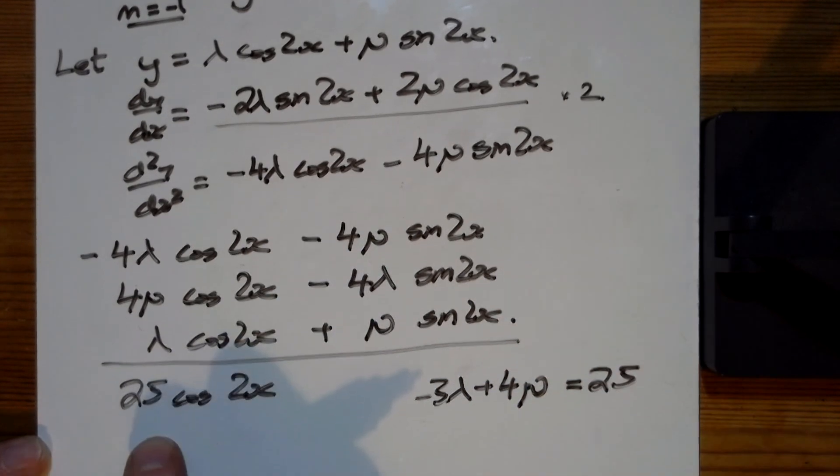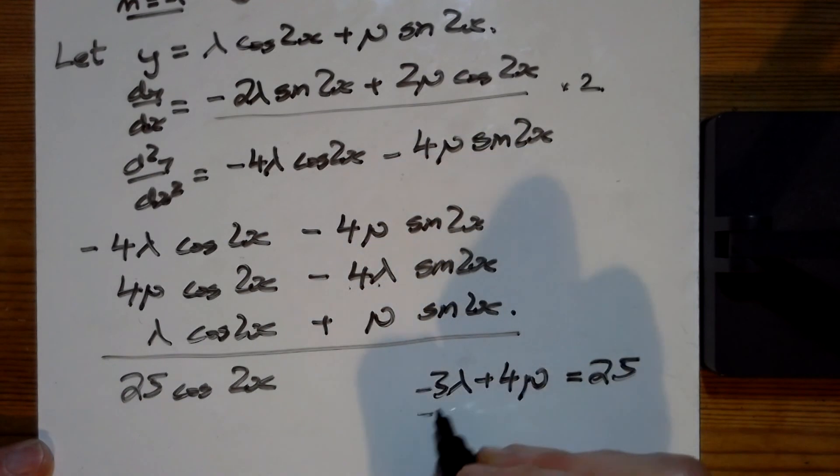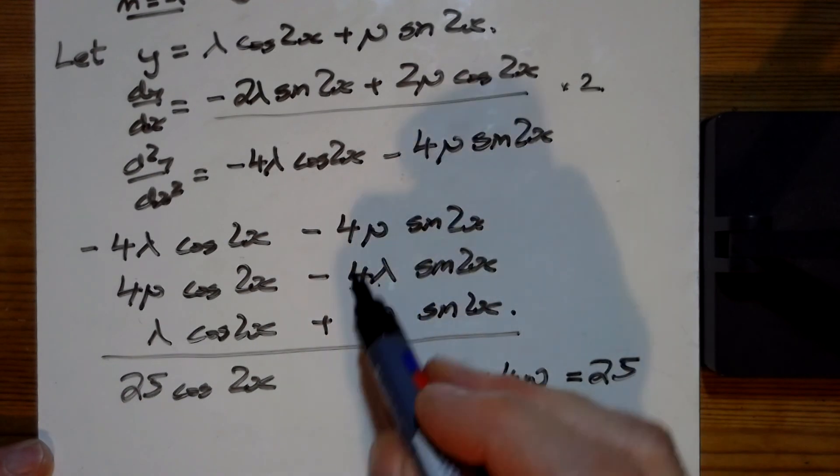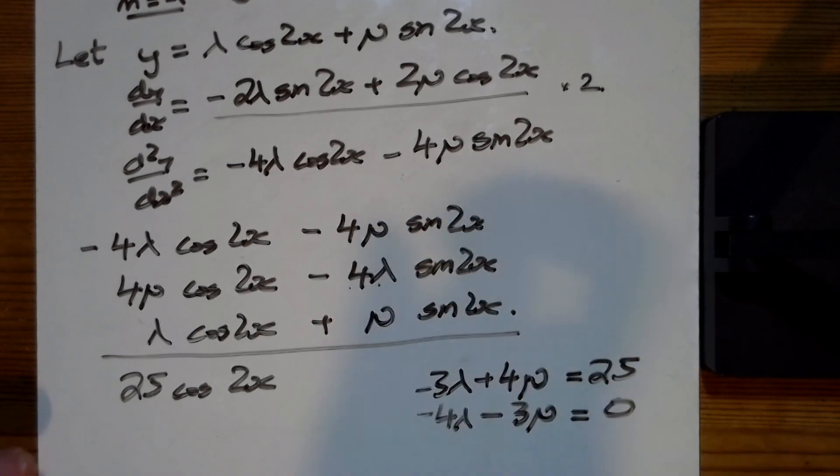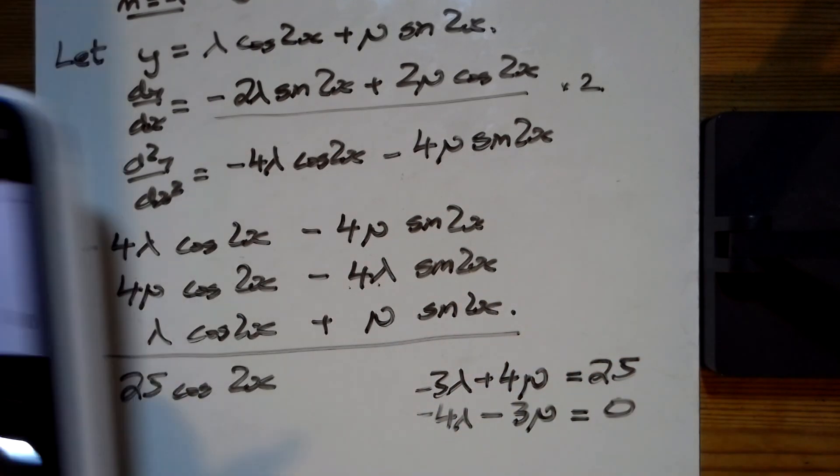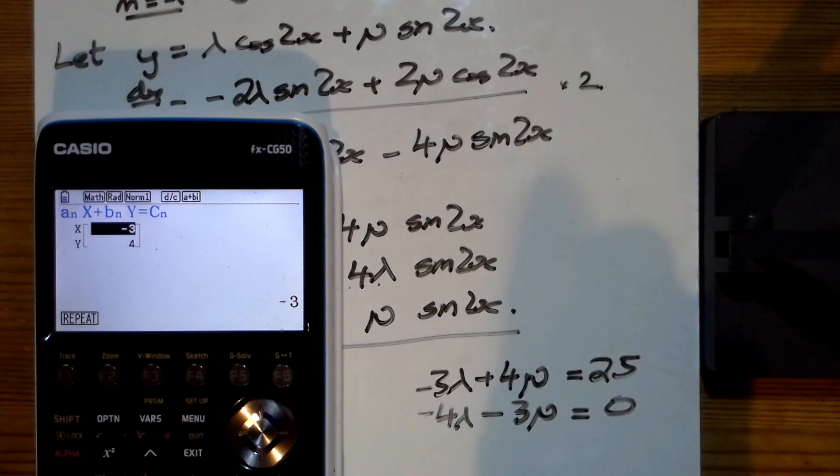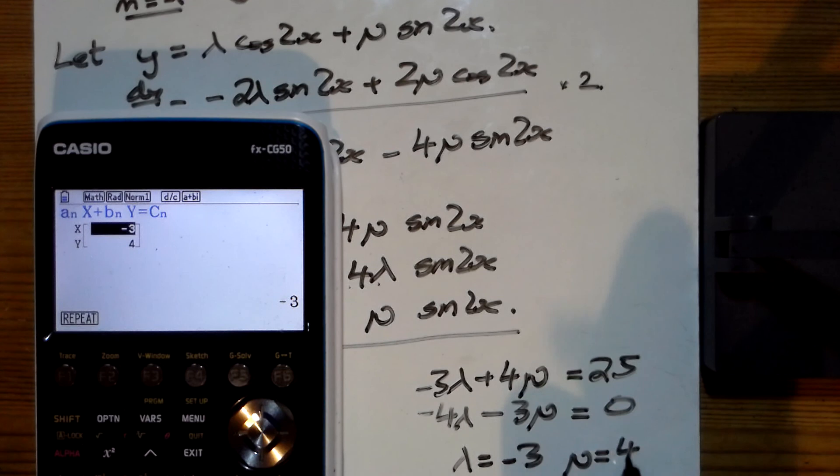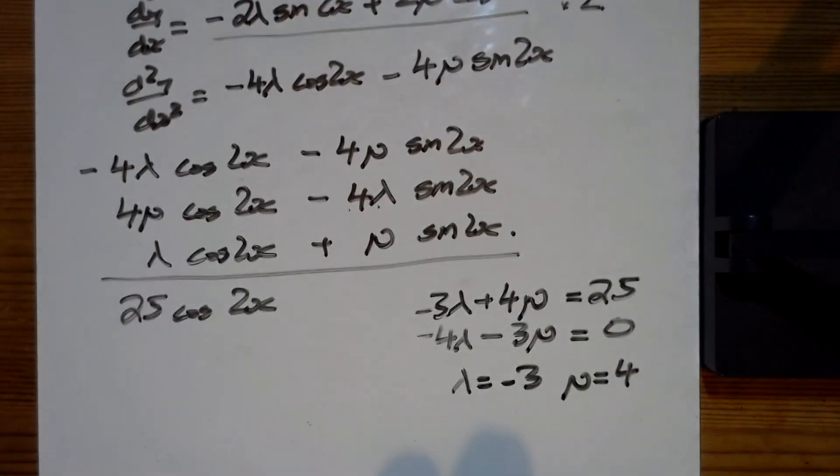But on the sines we've got -4λ and then -4μ and 1 making -3μ's, and that has to equal 0. I'll just stick that in my simultaneous equation solver: -3, 4, and 25; -4, -3, and 0. That tells me that λ = -3 and μ = 4.